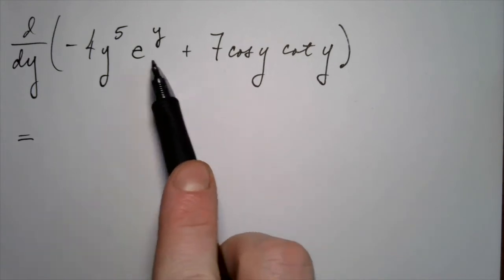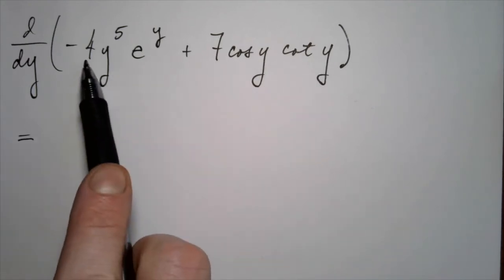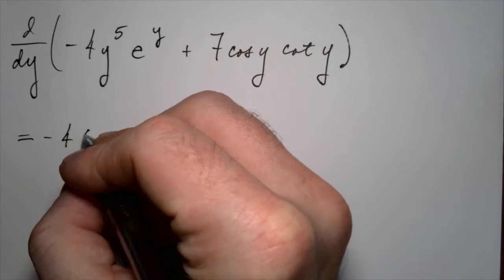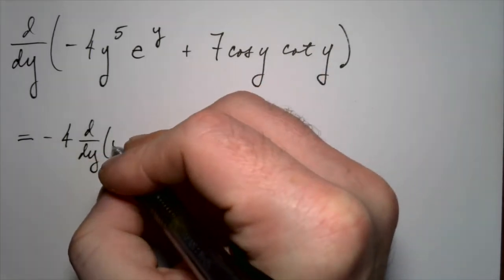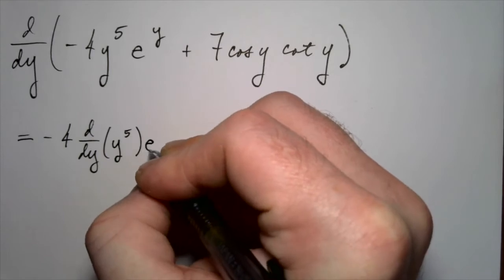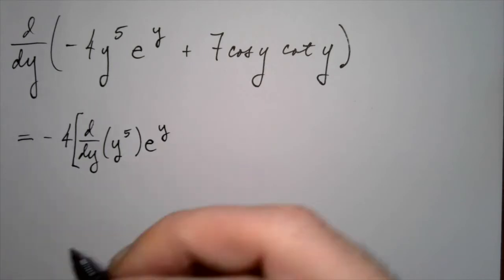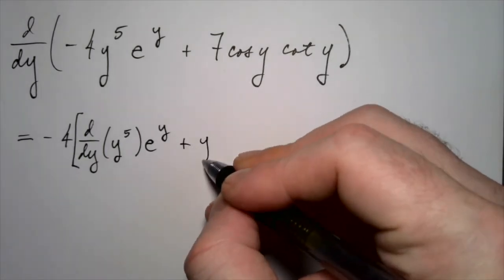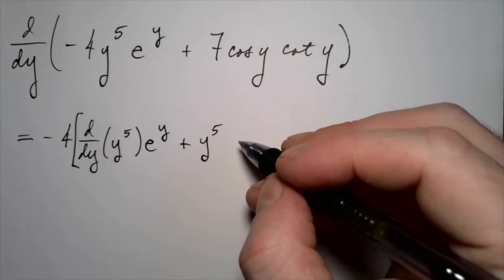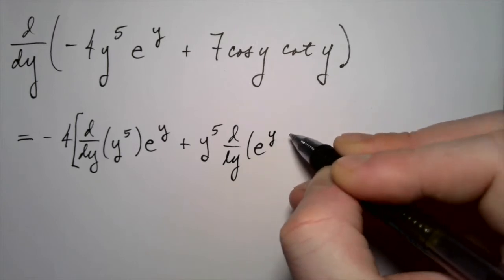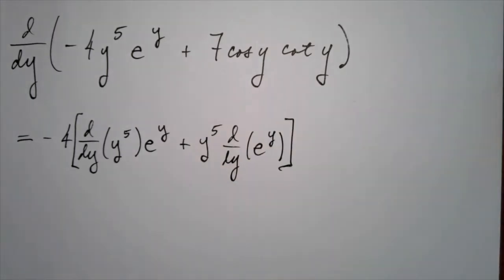It's a sum of two functions. Sums play nicely with derivatives. So we just need to take the derivative of each piece. Analyzing the first piece, the constant comes out. And then we'll take the derivative of y to the fifth times e to the y using the product rule. Here's the product rule. Derivative of the first times the second plus the first times the derivative of the second. So that's the derivative of minus four y to the fifth times e to the y.